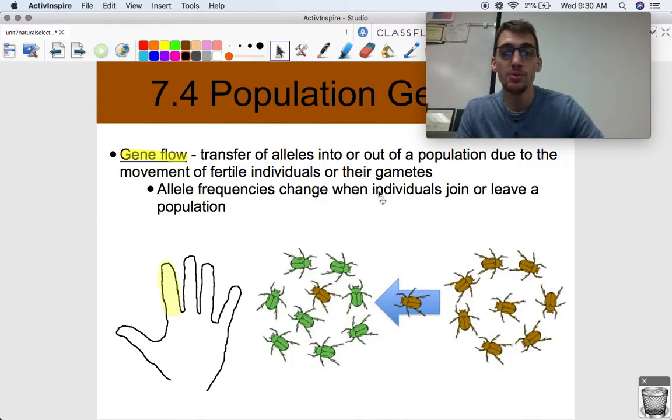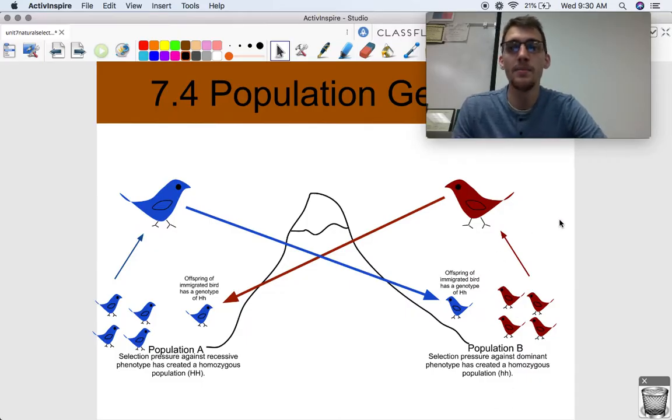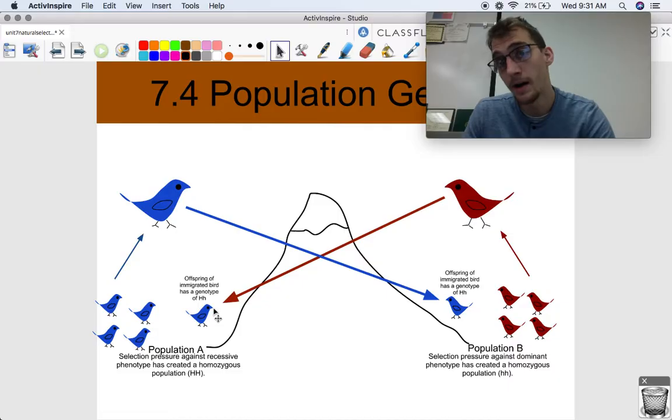Allele frequencies change when individuals join or leave a population. The last image I'm going to leave you with here - we got population A, selection pressure against recessive phenotype has created a homozygous population. But if some alleles joined the other population, allele frequencies have changed. We got all homozygous recessive over here, all homozygous dominant over here. But if birds from each population end up breeding with each other, they're going to change the allele frequencies. This population might have the introduction of a dominant allele, this population is going to have the introduction of a recessive allele, so on and so forth.